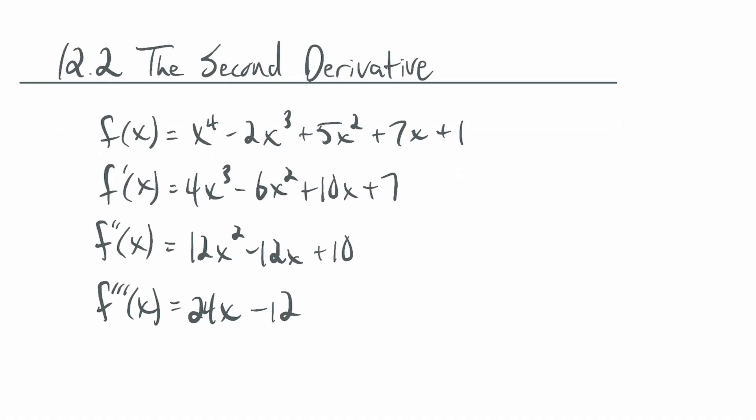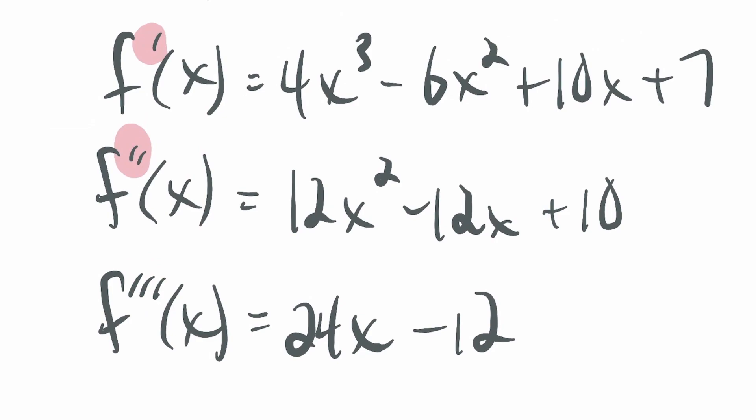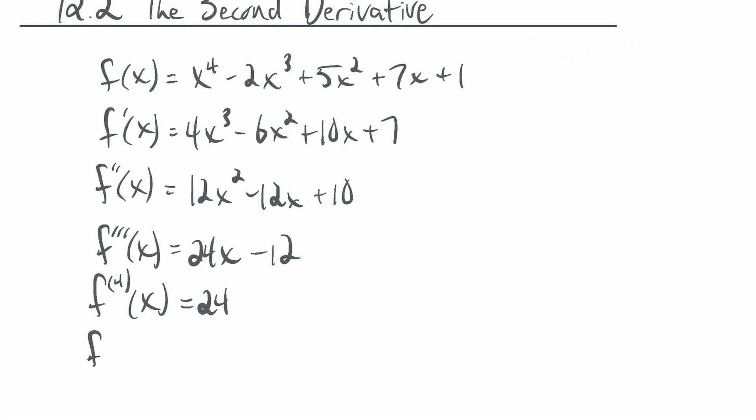At a certain point, this prime notation starts to become a bit of a pain. Starting with the fourth derivative, the notation is a little 4 in parentheses like an exponent. So f⁽⁴⁾(x) = 24. Then the fifth derivative, f⁽⁵⁾(x), written with a little 5 in parentheses, gives 0. And the sixth derivative would also be 0.